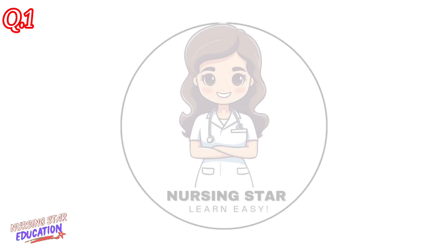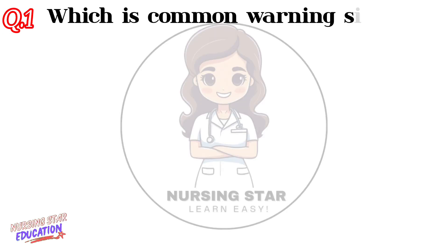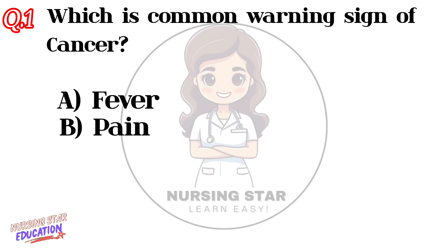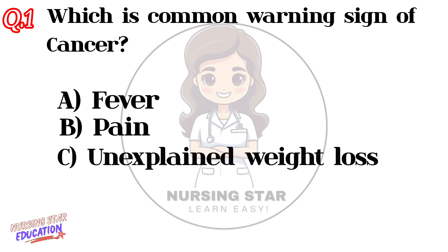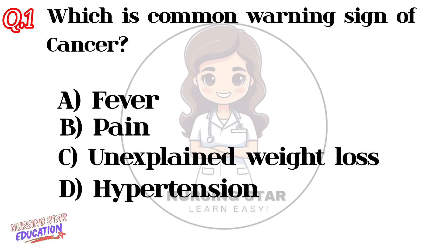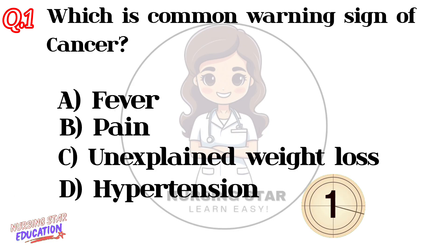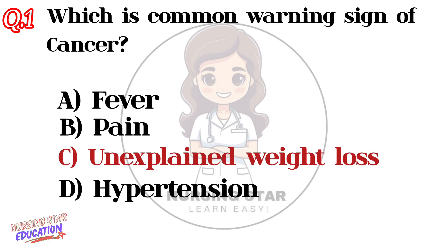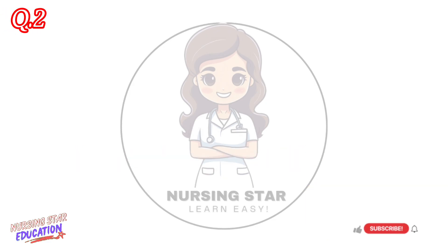Question number one: Which is the most common warning sign of cancer? Option A: Fever. Option B: Pain. Option C: Unexplained weight loss. Option D: Hypertension. Correct answer: C — Unexplained weight loss.